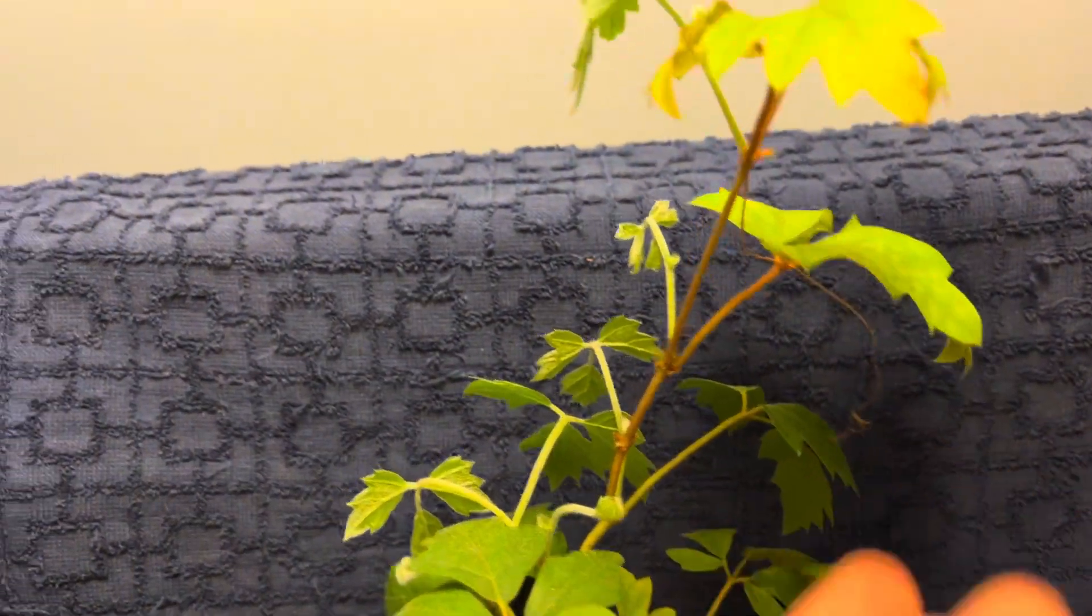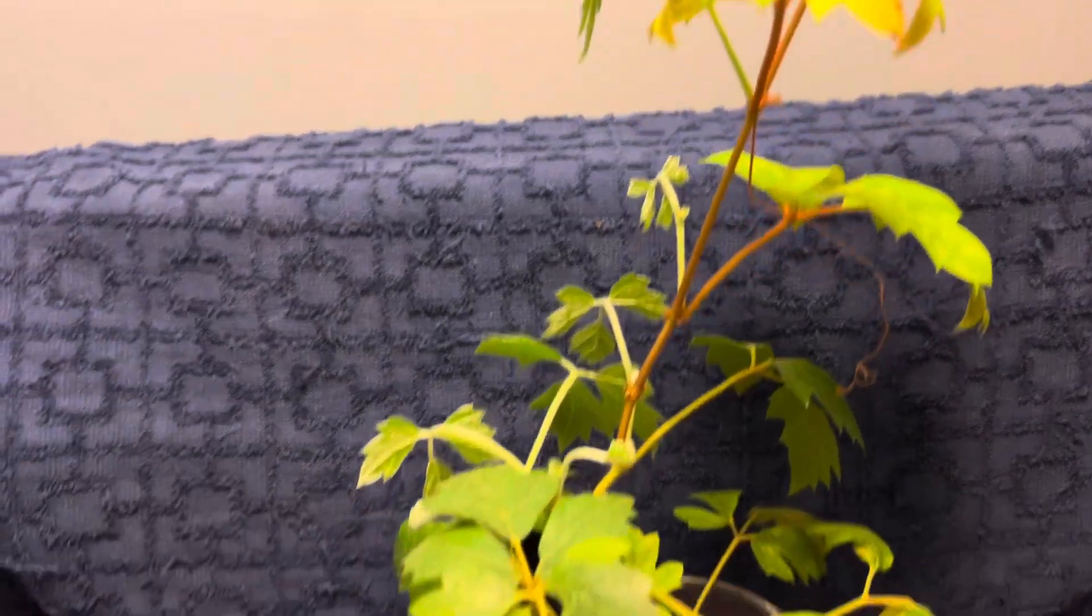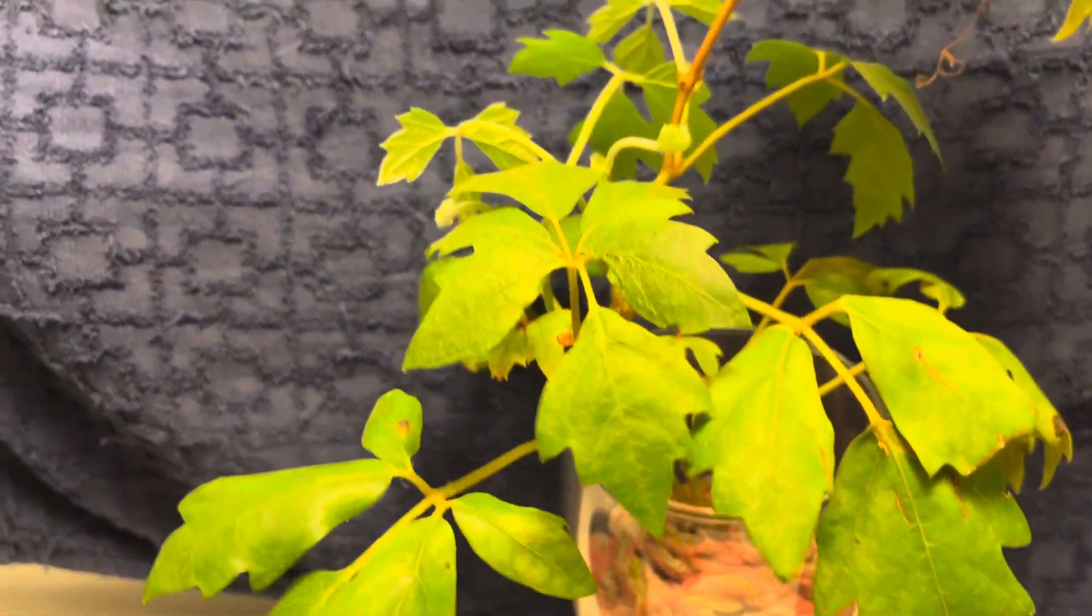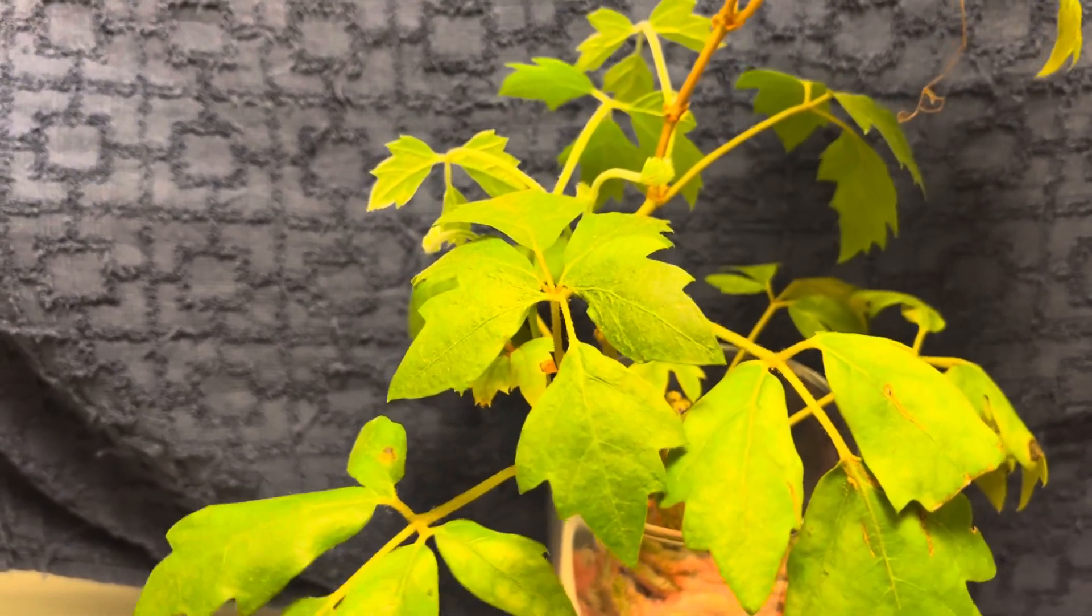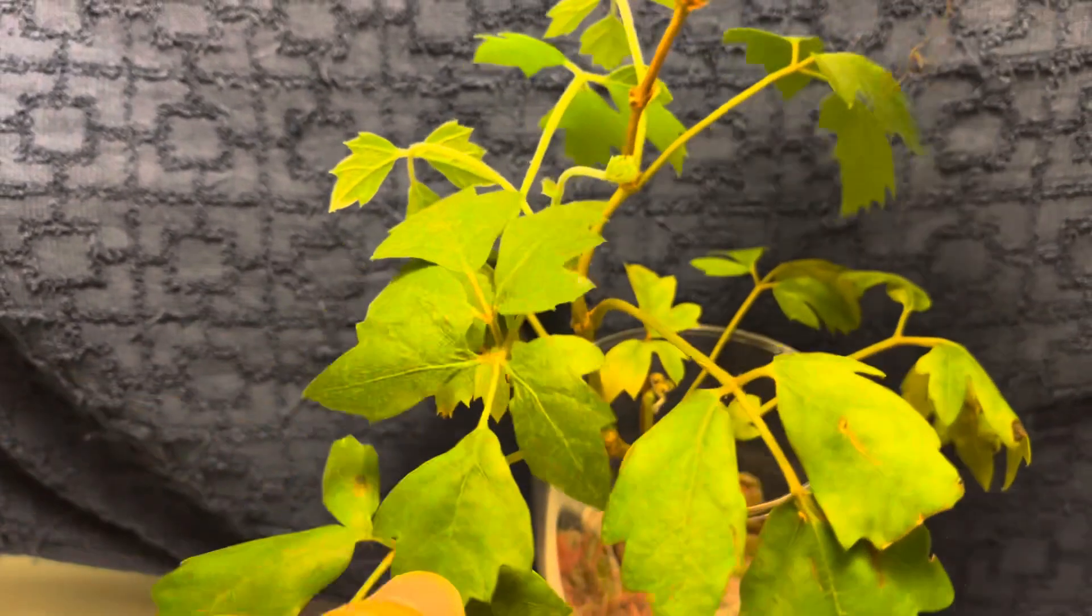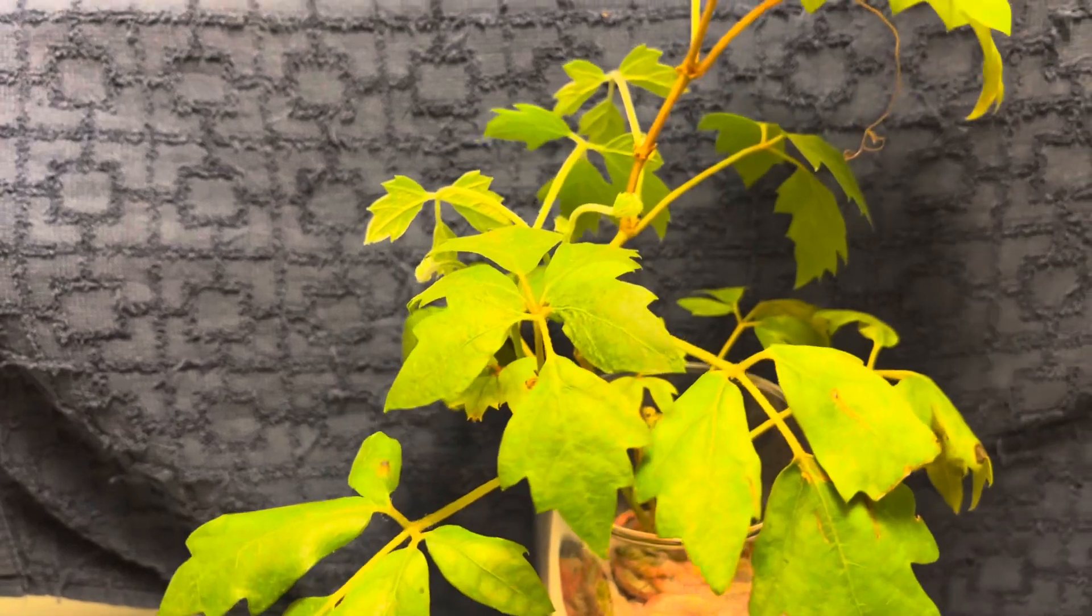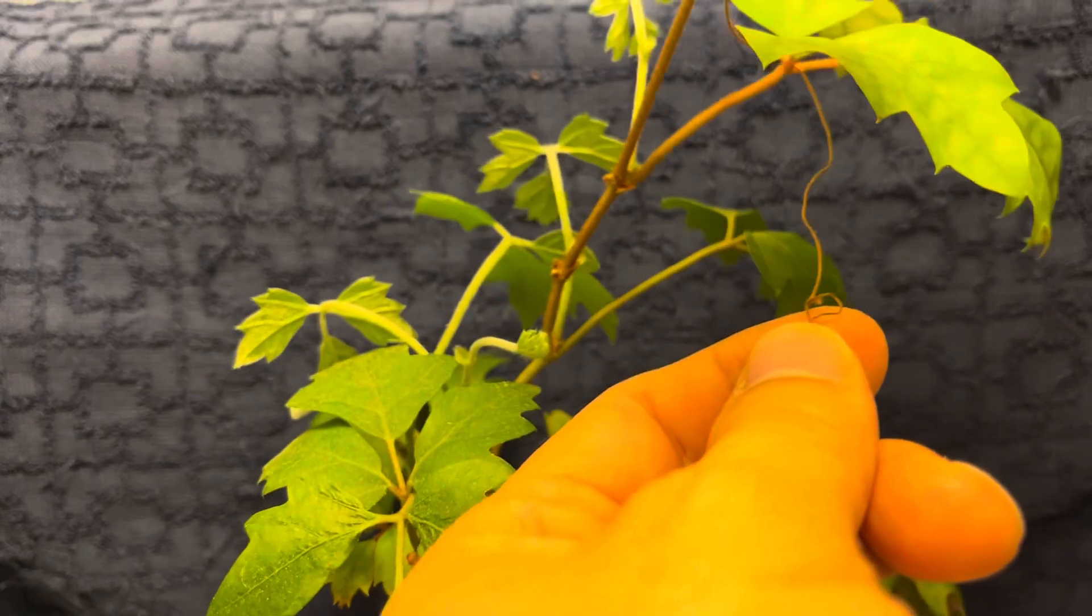They have tendrils that reach out and attach to anything they can find. So you may find yourself cutting tendrils, just the tendrils, so they don't attach to anything to a point where you can't remove it. You could try unraveling the tendrils because they wrap around things.